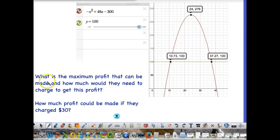If we ask them additional questions, like for example, what is the maximum profit that can be made by this club, and how much would they need to charge to get this profit, well, we have a nice graph here, and I didn't have to do very much algebra, and I can see that my maximum profit that I can make is going to be $276. So I can actually potentially make $276 if I sell it for $24 a piece.